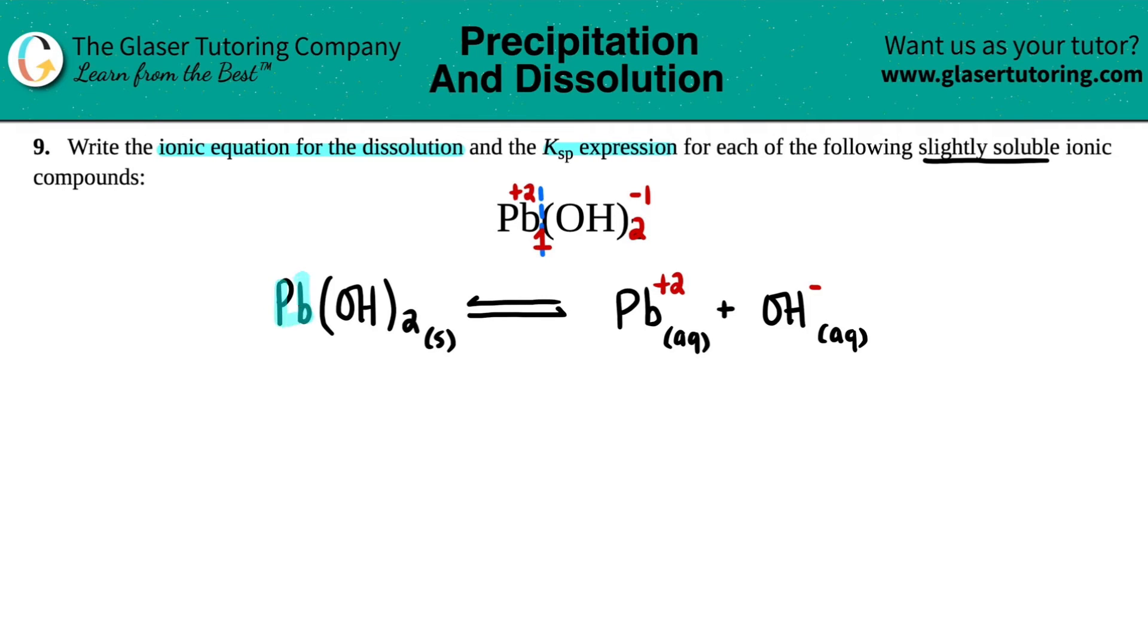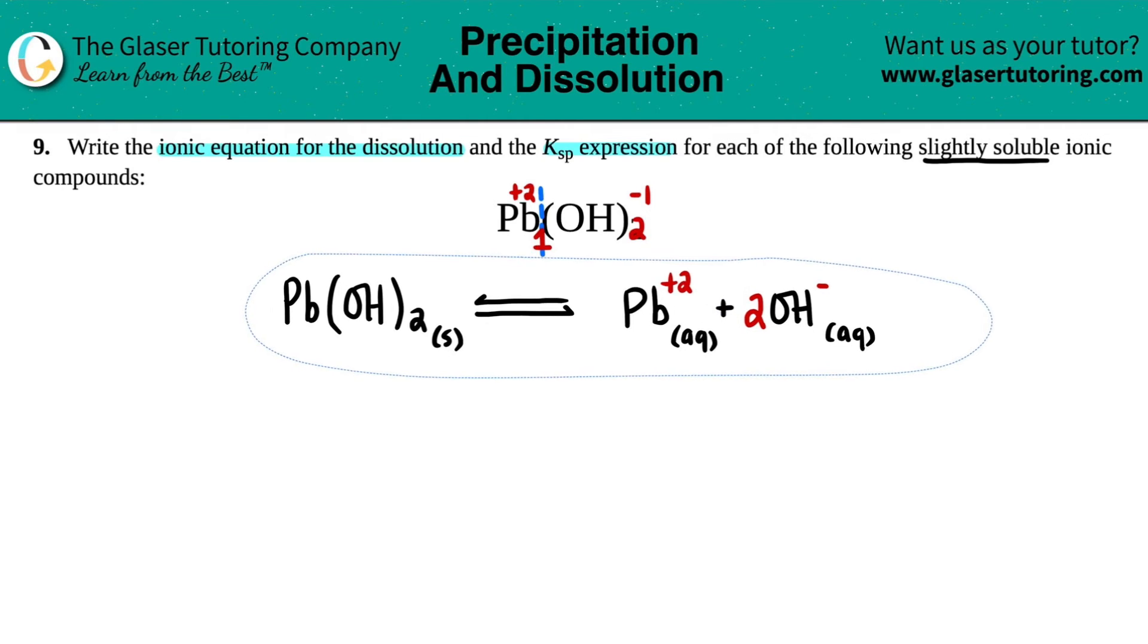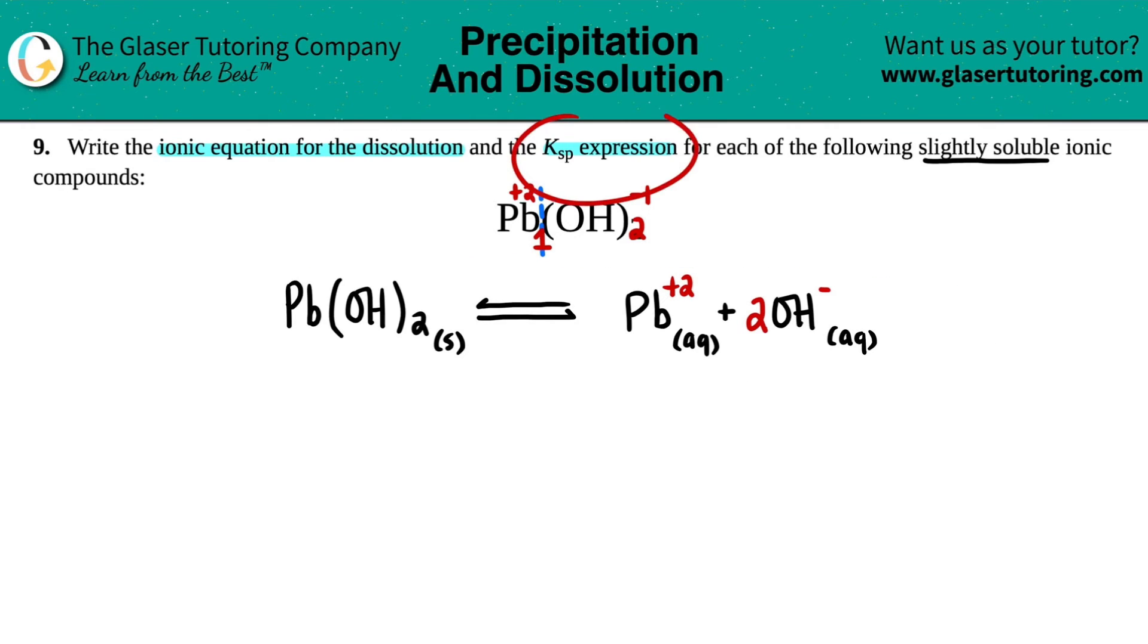Well, I have one Pb, so I don't have to write any number here. But I have two hydroxides. So I have to come over to the product side and say I have two OHs. And now my equation is balanced. So I'm going to use this equation now to solve for the Ksp expression.